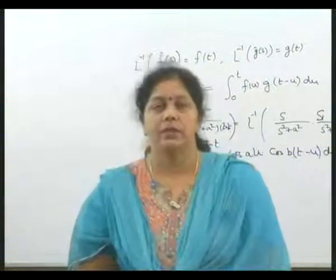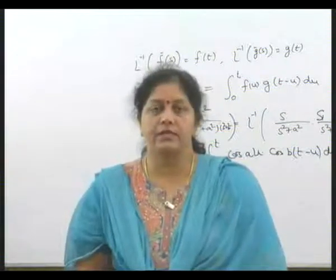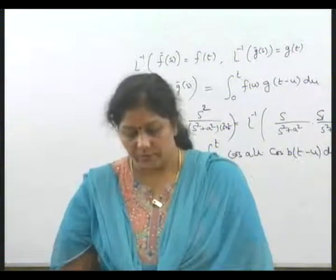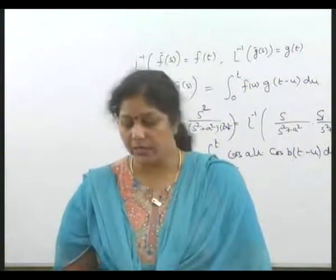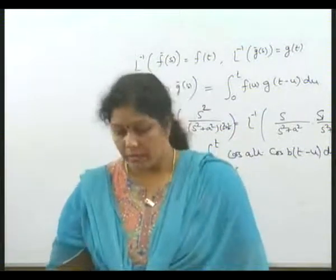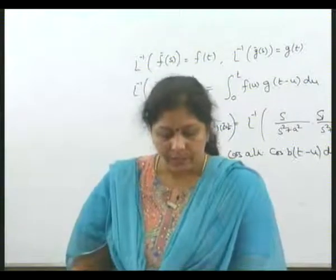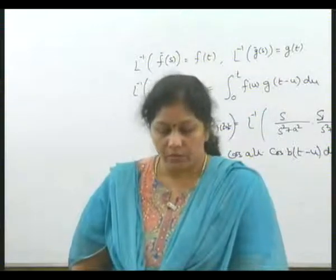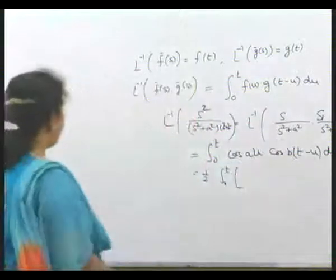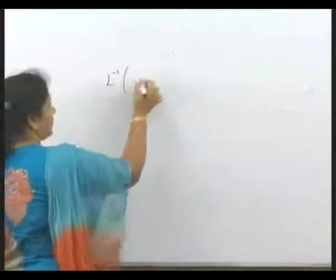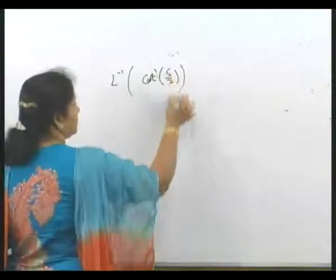The convolution is very helpful in solving these functions. Now suppose we have to find the inverse Laplace transformation of cot inverse of s by 2. We know the property that t f(t) is L inverse of minus d/ds of F-bar(s), so we let cot⁻¹(s/2) be F-bar(s) equal to f(t).